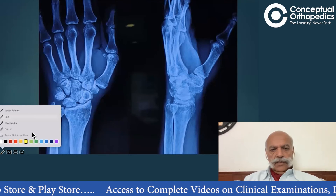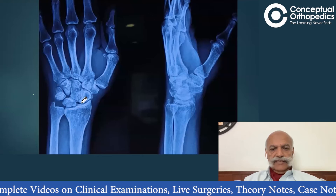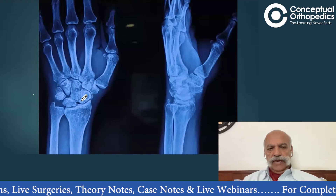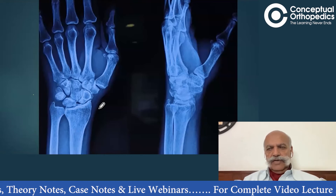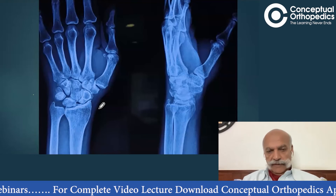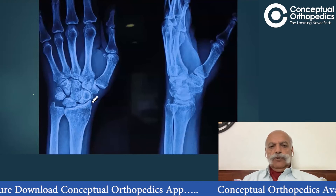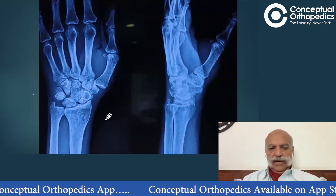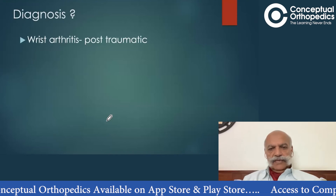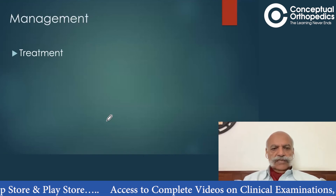If you look at the gap between the scaphoid and the lunate, you will see that the gap is increased, and this is what is known as the Terry Thomas sign. You can revisit the earlier discussion for those not present that day. It was a scapho-lunate traumatic dislocation three years old, which was now presenting as a radiocarpal arthritis. We discussed the diagnosis as a post-traumatic wrist arthritis.